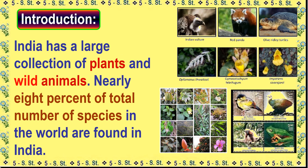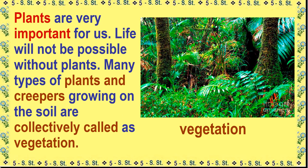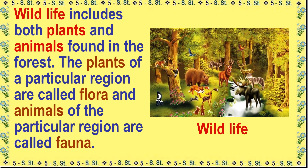India has a large collection of plants and wild animals. Nearly 8% of the total number of species in the world are found in India. Plants are very important for us. Life will not be possible without plants. Many types of plants and creepers growing on the soil are collectively called vegetation. Wildlife includes both plants and animals found in the forest. The plants of a particular region are called flora and the animals of a particular region are called fauna.